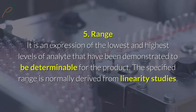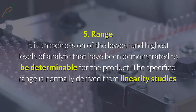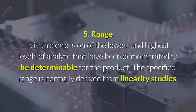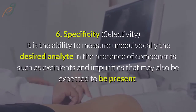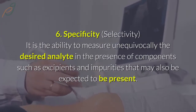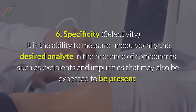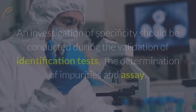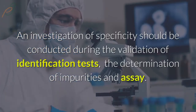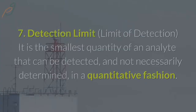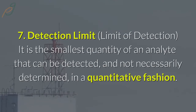5. Range: It is an expression of the lowest and highest levels of analyte that have been demonstrated to be determinable for the product. The specified range is normally derived from linearity studies. 6. Specificity/Selectivity: It is the ability to measure unequivocally the desired analyte in the presence of components such as excipients and impurities. An investigation of specificity should be conducted during the validation of identification tests, the determination of impurities, and assay.